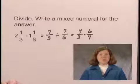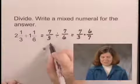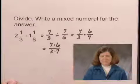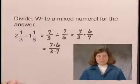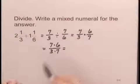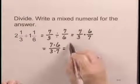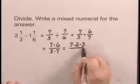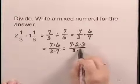Now we can multiply numerators and multiply denominators. We have 7 times 6 over 3 times 7. And we factor to see if we can simplify. 6 can be factored as 2 times 3. So I write 7 times 2 times 3 over 3 times 7.